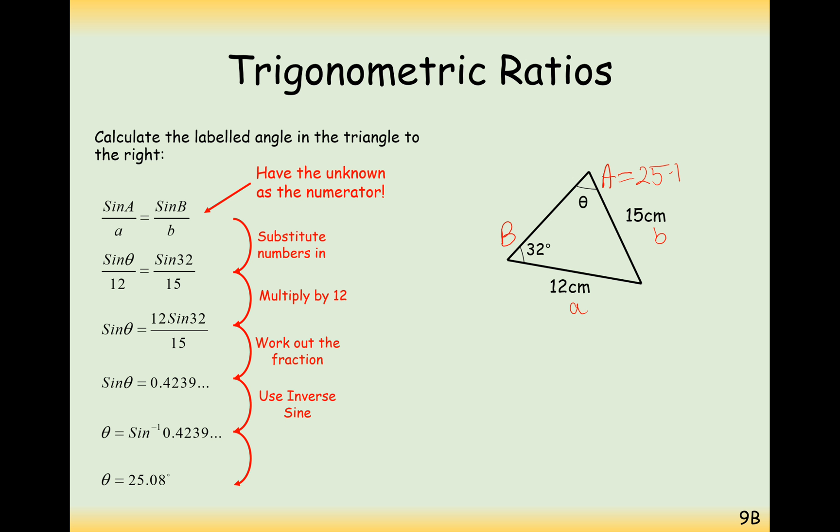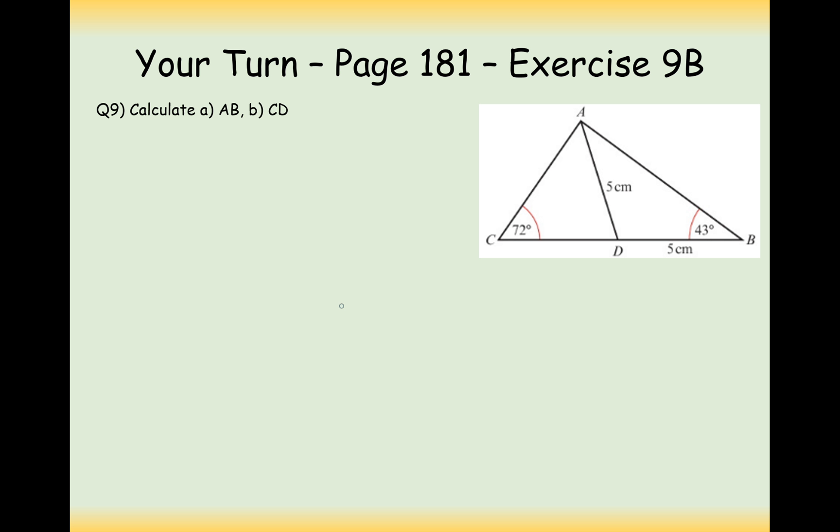Okay, so we can either find an angle from its opposite side and another pair of opposite side and angles, or we can find the side with an opposite angle and another pair of opposite sides and angles. So it's really important that we label up our diagram correctly with opposite sides and angles taken priority. Okay, so here is a diagram of a question on question 9 from exercise 9B. Can you calculate the length of AB and the length of CD? Pause the video and have a go.